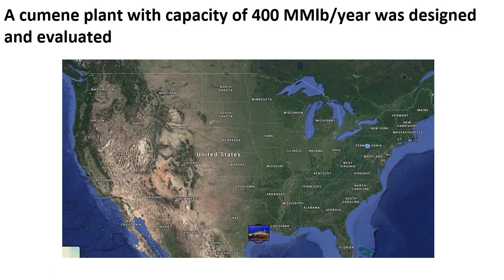Our cumene plant has the capacity of 400 million pounds per year, and it's located at the U.S. Gulf Coast, as indicated on the U.S. map.